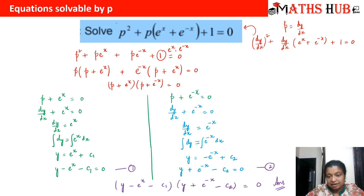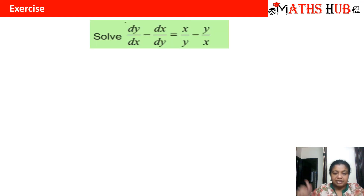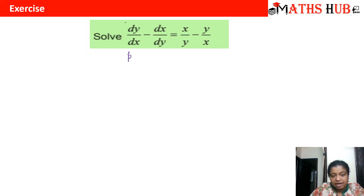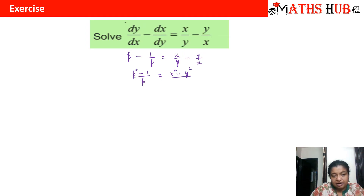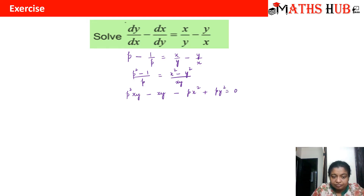Let us try another question. We have dy/dx − dx/dy = x/y − y/x. Converting, since dy/dx = P and dx/dy = 1/P, this becomes P − 1/P = x/y − y/x. Taking LCM gives (P² − 1)/P = (x² − y²)/(xy). Cross-multiplying: P²·xy − xy = P·x² − P·y², so P²·xy − P·x² + P·y² − xy = 0.